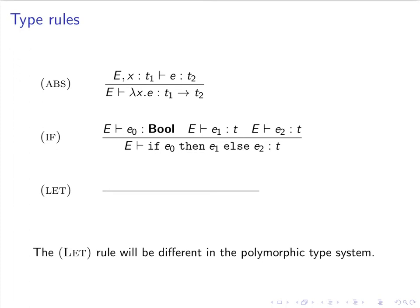How about let expressions, then? The rule we're giving now will be different when we talk about polymorphism. But for now, there is no polymorphism, so it's fairly simple. If we want to type let X equals E1 in E2, then that has type T2 if E1 is typeable with some type T1, and then if we assume that X has type T1, we can type the body of the let expression E2 with type T2. Those are the type rules for the simply typed version of our language.